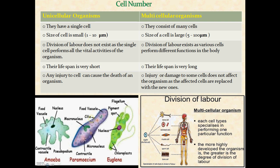Muscle cells are present in the heart, limbs, feet, alimentary canal, and urinary bladder. They help with locomotion, movement of body parts, and movement of urine and blood. The sperm cell is meant for reproduction. The bone cell stores certain minerals and provides stiffness and structural support to the body.